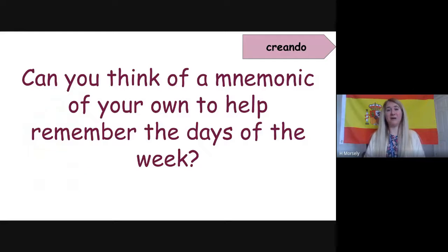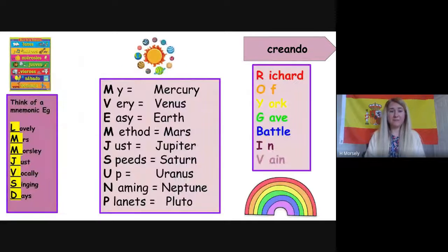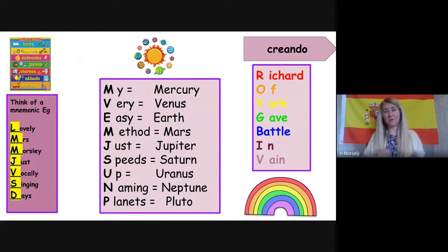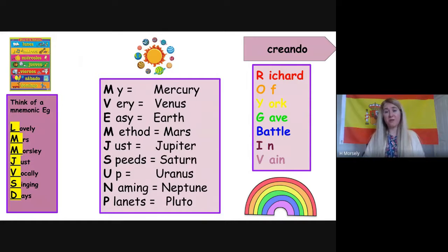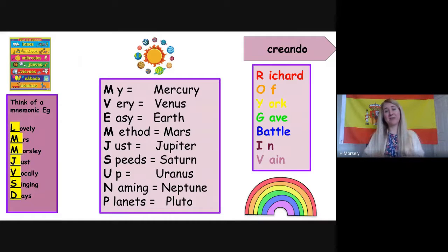As an extension, have a go at thinking of a mnemonic of your own to help remember the days of the week. Mine was Lovely Mrs Morsley Just Vocally Singing Days — L for lunes, M for martes, M for miércoles, J for jueves, V for viernes, S for sábado, D for domingo. We use mnemonics a lot without realising it — for example, 'My Very Easy Method Just Speeds Up Naming Planets' for the planets, and 'Richard of York Gave Battle in Vain' for the colours of the rainbow. Have a go at making up your own!